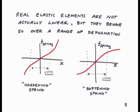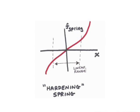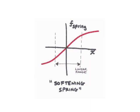Many real elastic elements in mechanical systems are not actually linear, but they often behave as linear over some range of deformation. There are two types of elastic elements that are nonlinear: the hardening spring elements and the softening spring elements. In the hardening spring elements, the restorative force increases faster with deformation than would be governed by a linear spring law. In the softening spring elements, the restorative force increases more slowly with increased deformation than would occur if the spring element was a linear spring element.